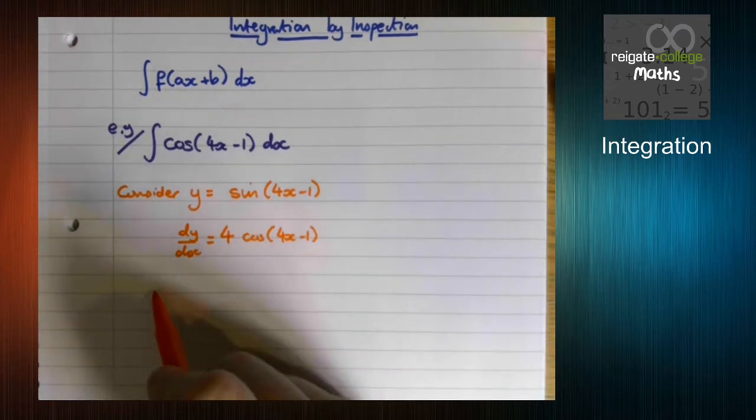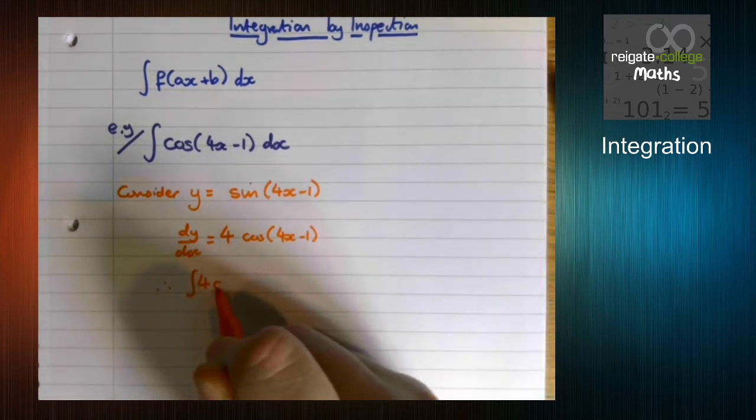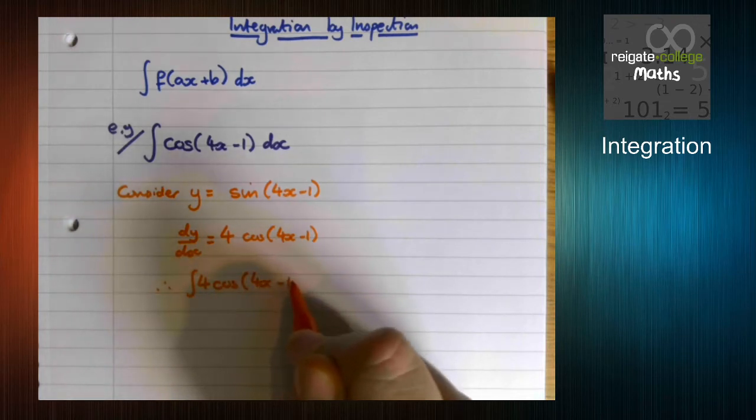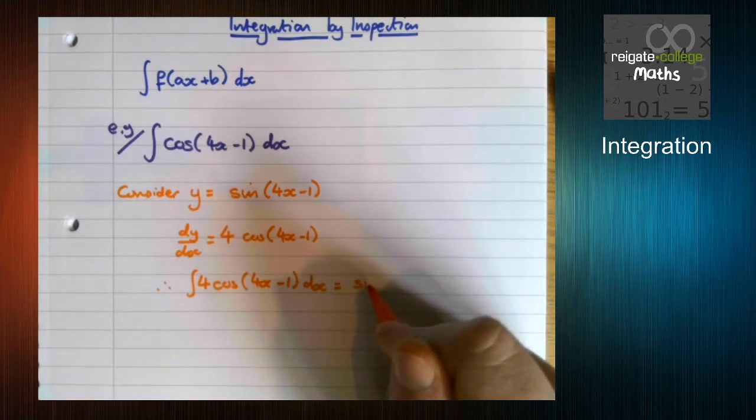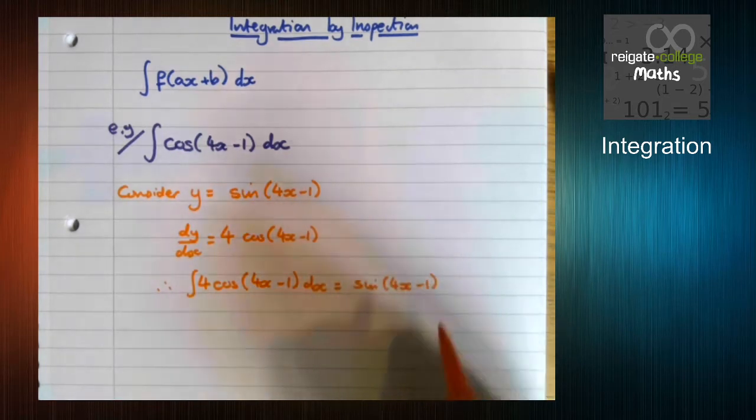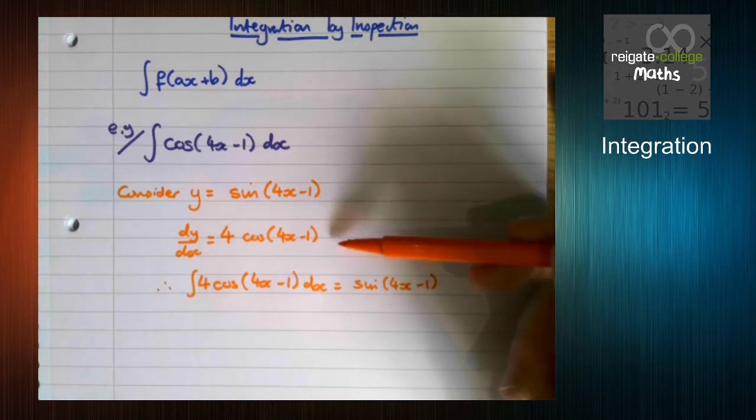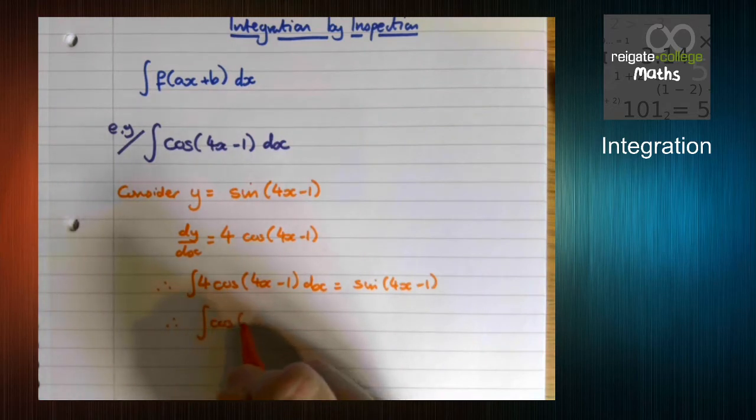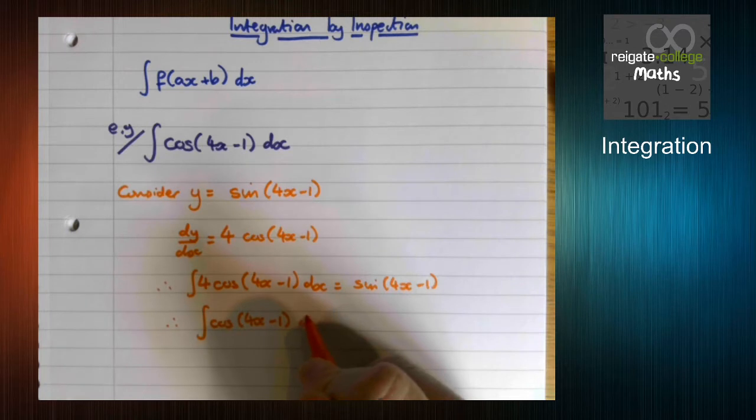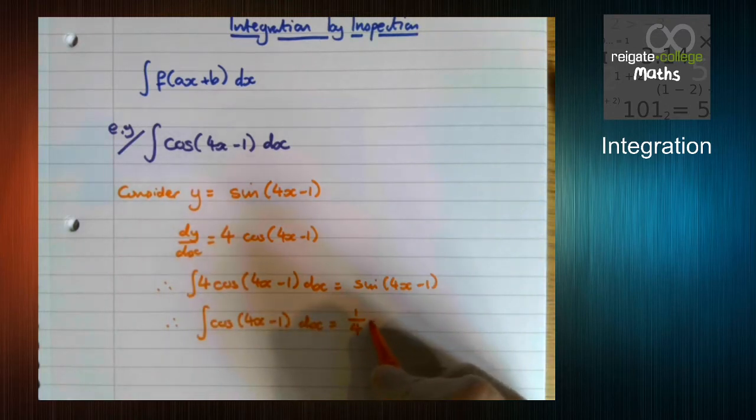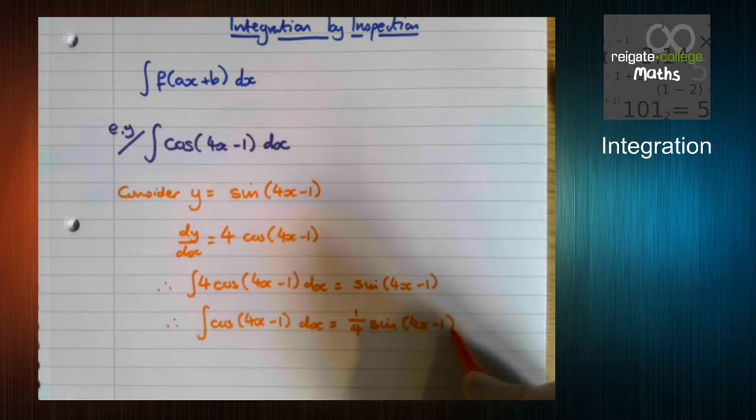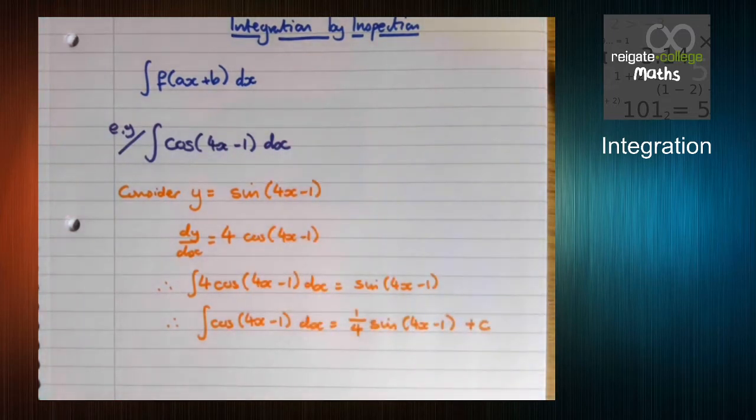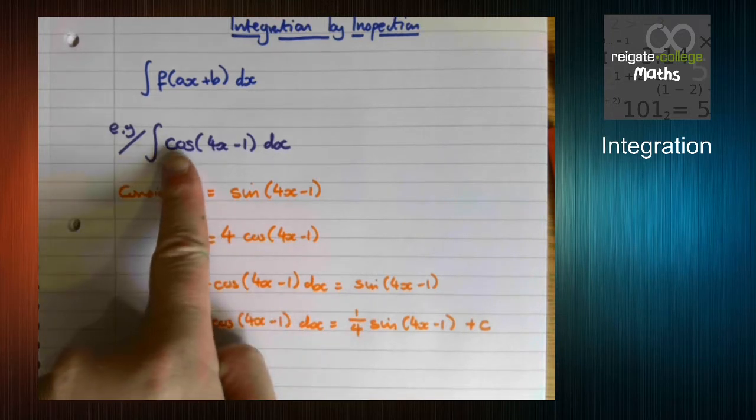So this means that the integral of 4 cos 4x minus 1 is sine of 4x minus 1. Remember integration is the reverse of differentiation. So the integral of cos 4x minus 1 is a quarter sine 4x minus 1 plus c. So that's our final answer.